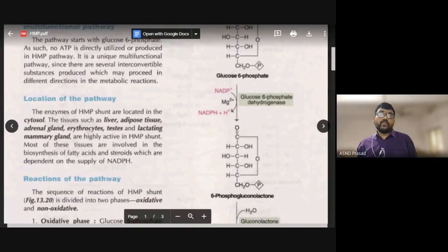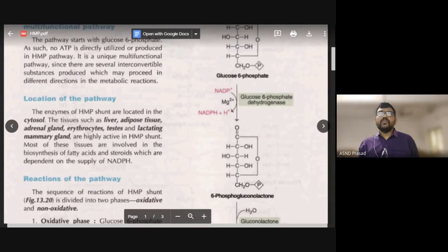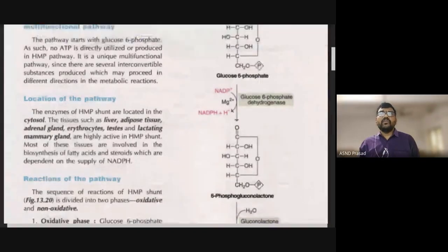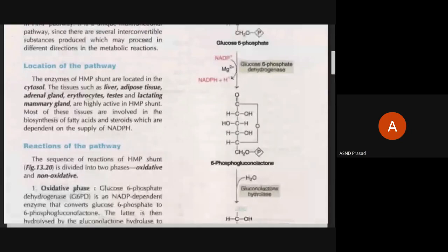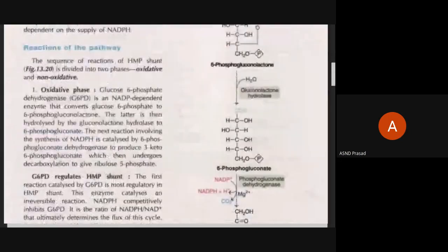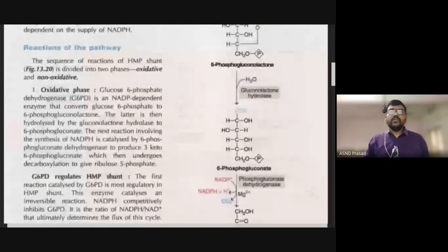This pathway is important for fructose and ribose production, and for milk production in mammary glands. The HMP pathway has two phases: the oxidative phase and the non-oxidative phase.